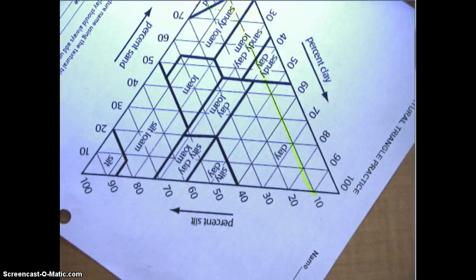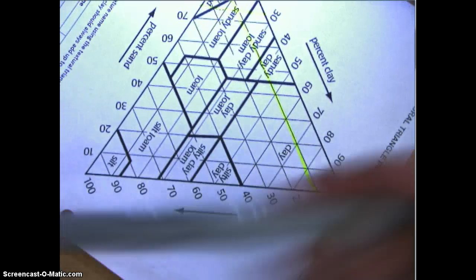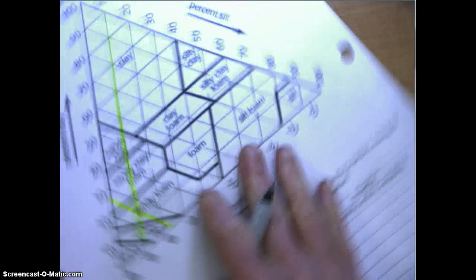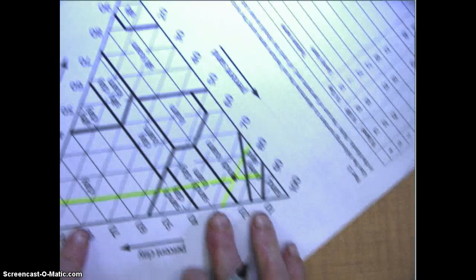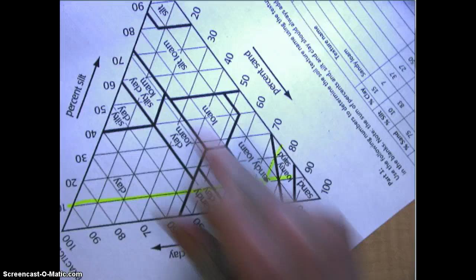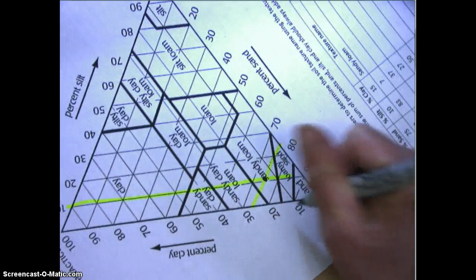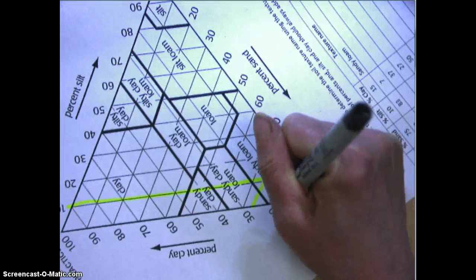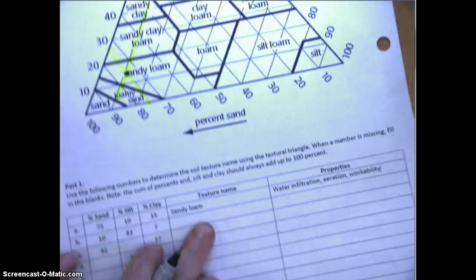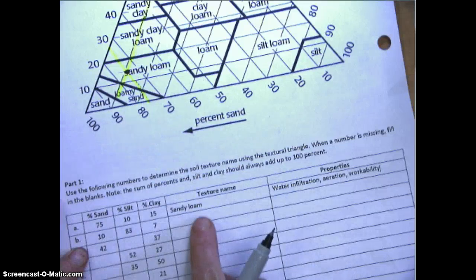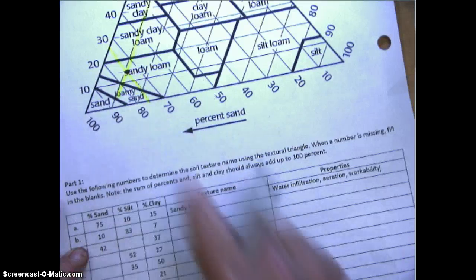We'll take our highlighter and highlight 10% silt. Where these two lines intersect, that should be where your clay is. If we go to clay, you want to turn it to the clay side. It looks like between 10 and 20 is 15% clay, and indeed that was 15% clay. So that's where we got sandy loam.